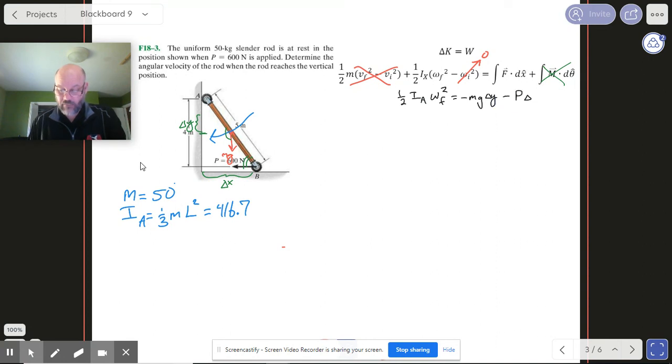And then my P is to the left, okay, and so I'm gonna have a minus P Delta X. Okay, now we might be sort of concerned about that because it looks like everything on the work side of our equation is negative. All right, so let's think about Delta Y and Delta X.